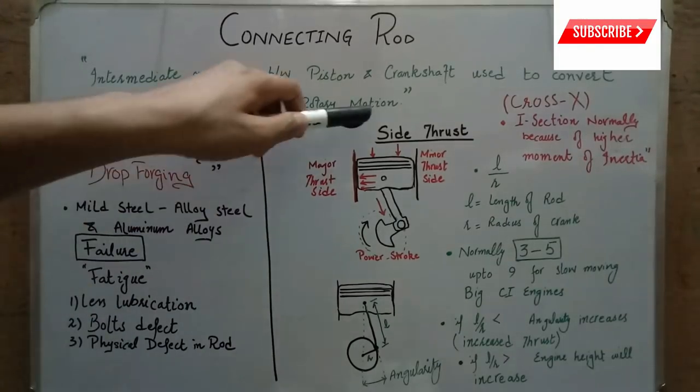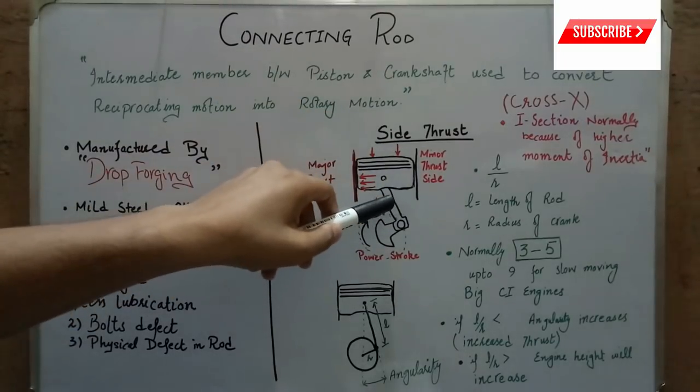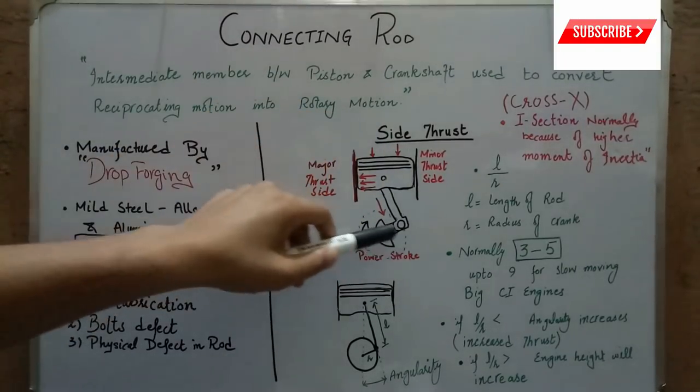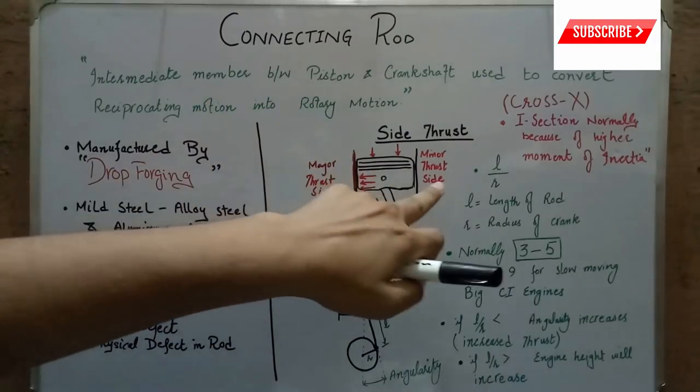Side thrust is produced in the cylinder walls due to the motion of the connecting rod. This side thrust is maximum in the power stroke, in which one side is more stressed than the other side.